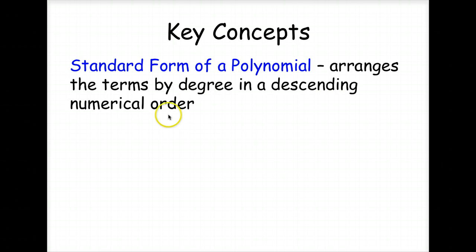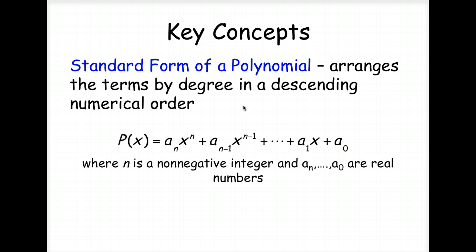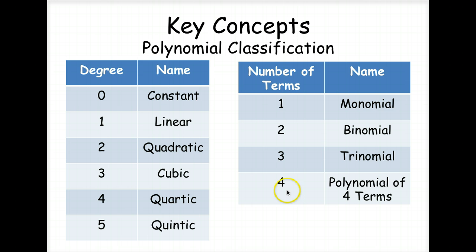Standard form of a polynomial arranges the terms by degree in descending numerical order. So this is showing the function p of x, where n is a non-negative integer, and a sub n through a sub 0 are real numbers. You'll need to have this, notice this in your notes, where the degree of 0, if it's only a constant, so like a 4 or a 5 or a 2, just nothing but that number, it's a degree of 0.